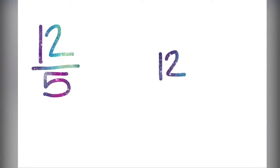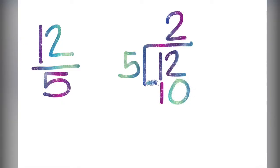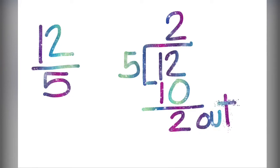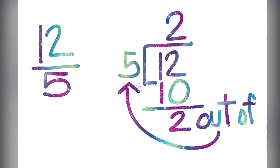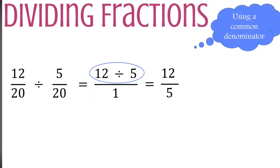To change our improper fraction of twelve-fifths into a mixed number we're going to set up a division problem of twelve divided by five. We can create two whole groups that will use ten pieces. Then we will have two left over out of five, giving us two-fifths. So our improper fraction of twelve-fifths is equivalent to two and two-fifths.